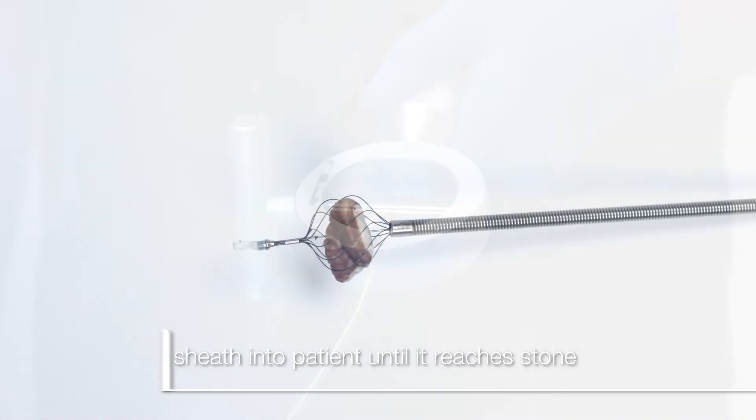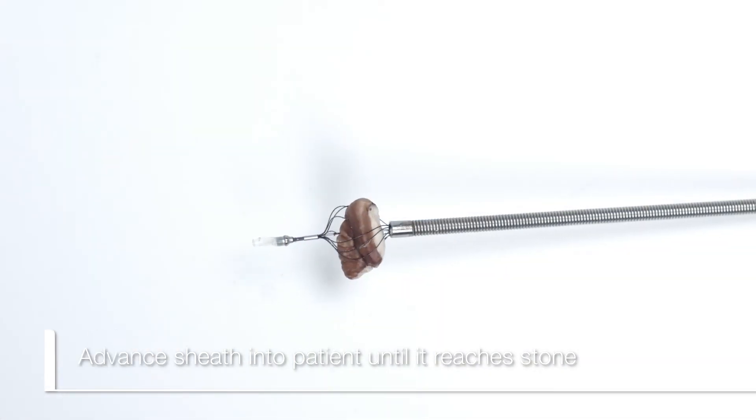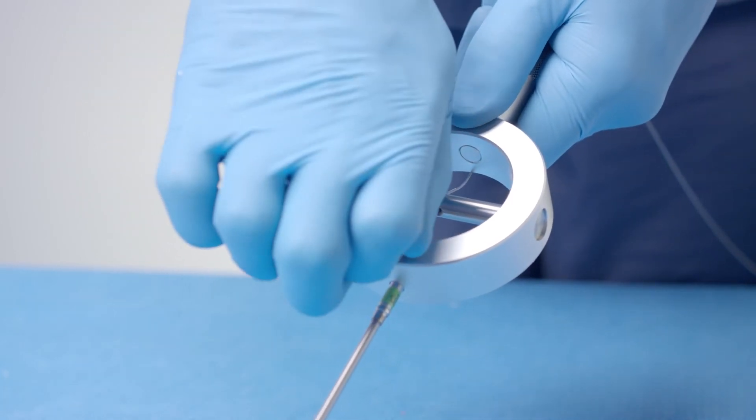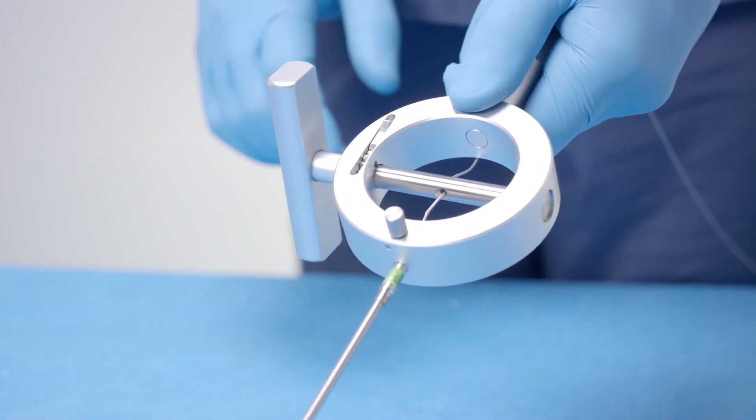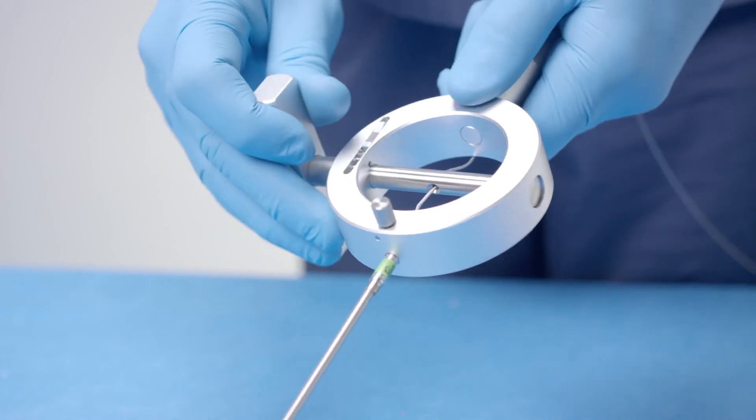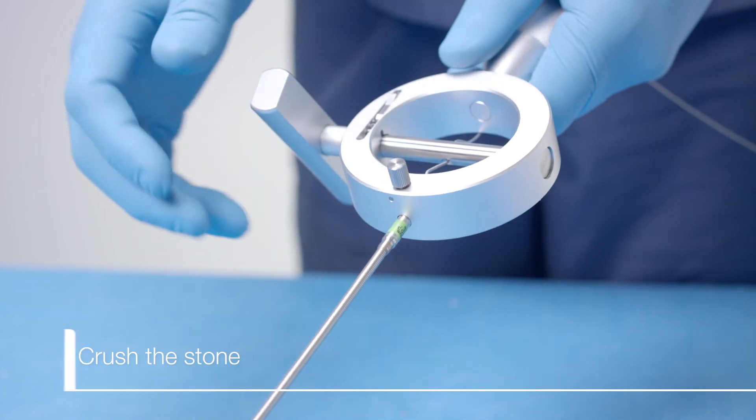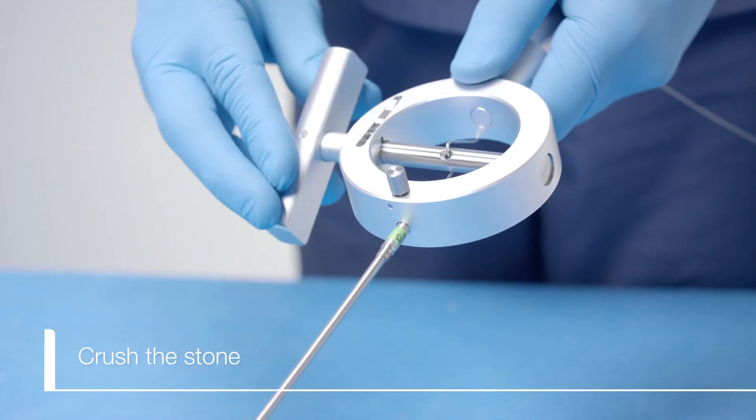Advance the sheath into the patient until it reaches the stone. Ensure that the ratchet is in the locked position and confirm the coil sheath is locked into the handle. While holding the basket wire against the handle with your left hand, slowly turn the rotatable bar with your right hand to crush the stone.